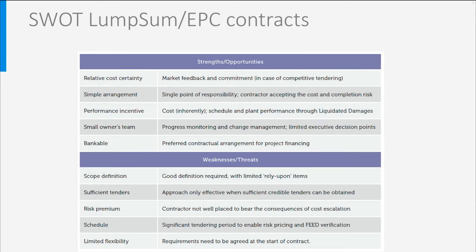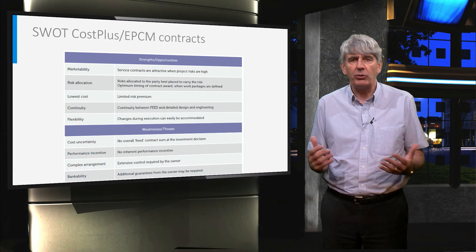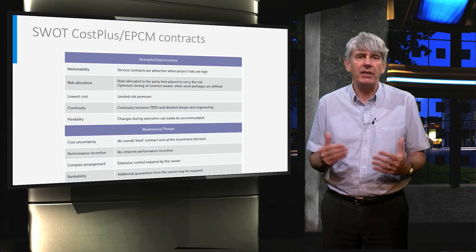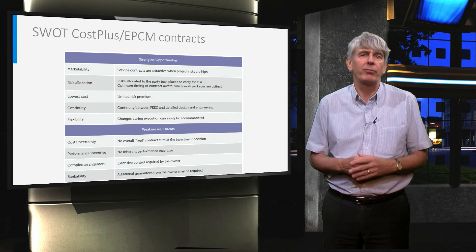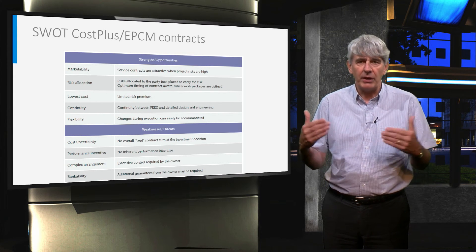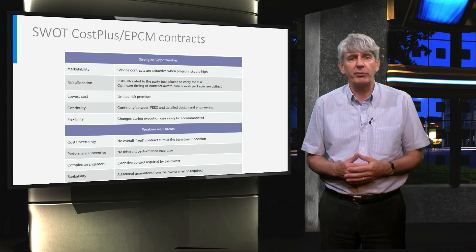What you should remember is that the main difference between these two contract forms is the risk profile. The contract type has, contrary to popular belief, hardly any influence on the performance of the project. The relational behaviors make the difference.